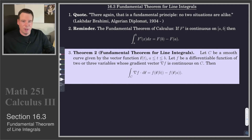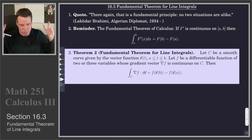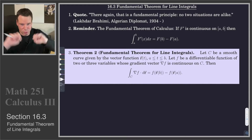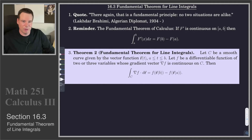We want to be able to compute an integral of a vector field over a curve, and we'd like to do that by just evaluating some sort of antiderivative at the endpoints. It turns out that the kinds of vector fields we can do this for are the conservative vector fields, and the antiderivative is the potential function for that conservative vector field. This is known as the fundamental theorem of line integrals.